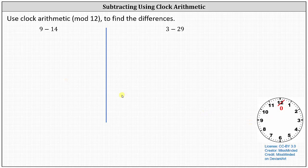We'll use clock arithmetic, or mod 12 arithmetic, to find differences using two different techniques. We'll also check the results on the clock shown on the right.